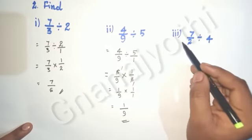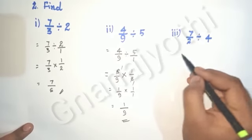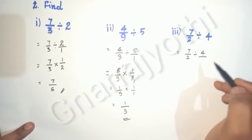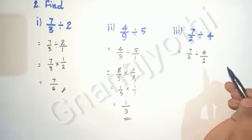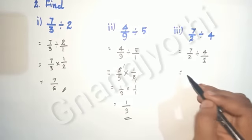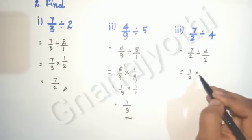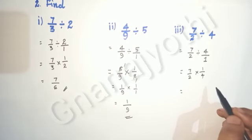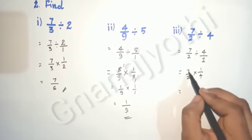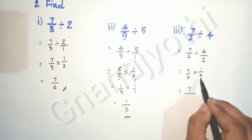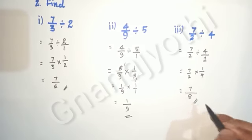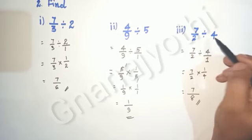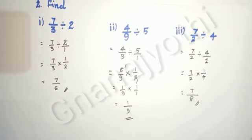Now let us see the third question: 7/2 divided by 4. The 4 has no denominator, so we write denominator as 1. Reciprocal: 7/2 multiplied by 1/4. Multiply numerator into numerator, denominator into denominator: 7 × 1 = 7 upon 2 × 4 = 8. Therefore, 7/2 divided by 4 gives us 7/8. This is how you divide fractions.